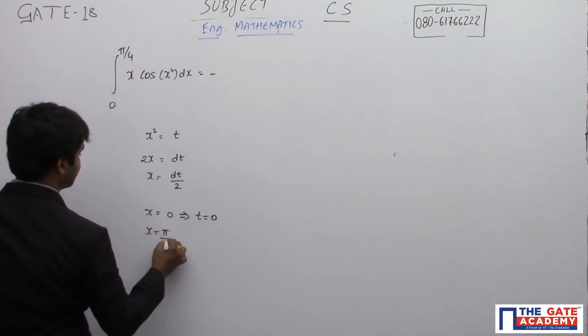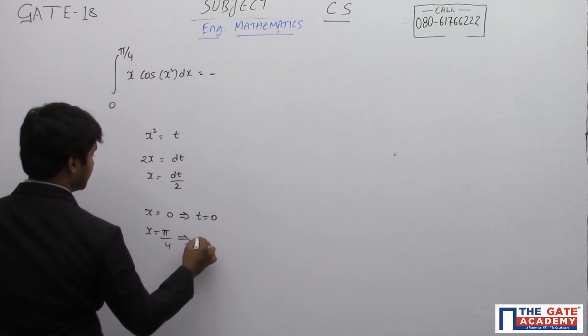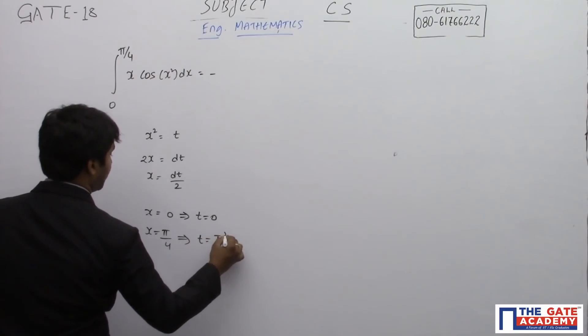If x is equal to pi by 4, which is the upper limit of the integral, then you are going to have t which is equal to pi square by 16.